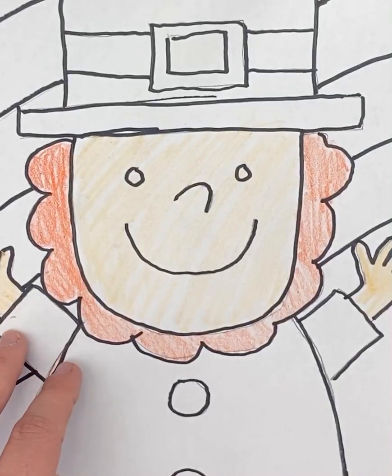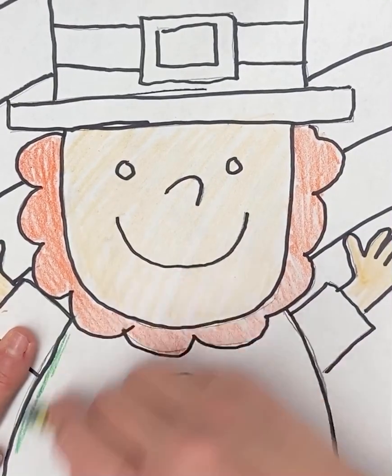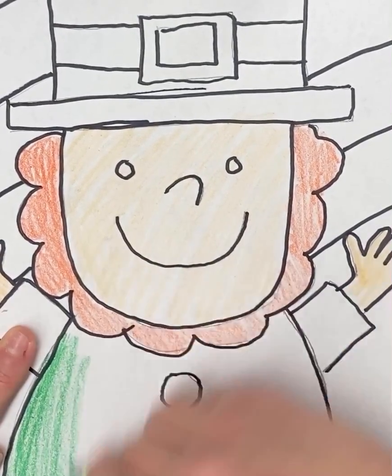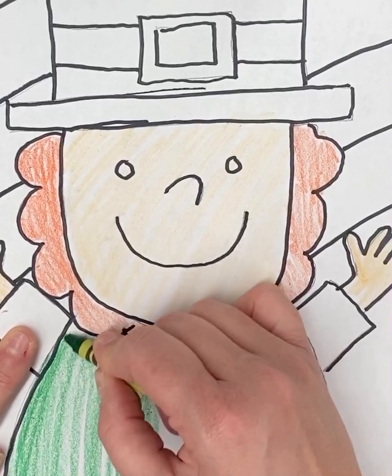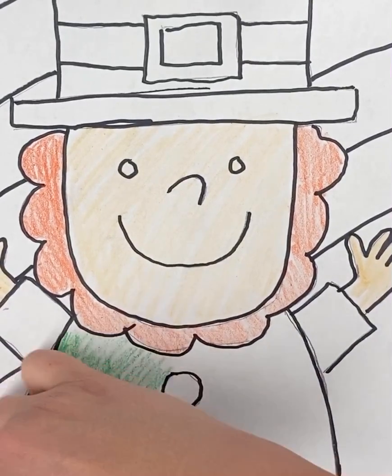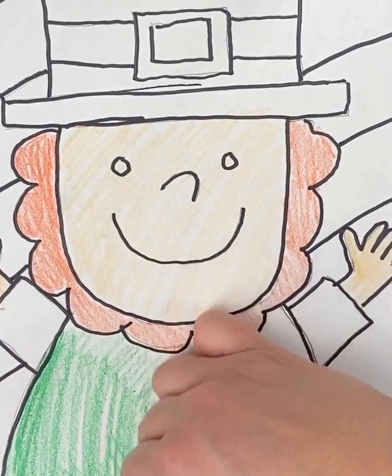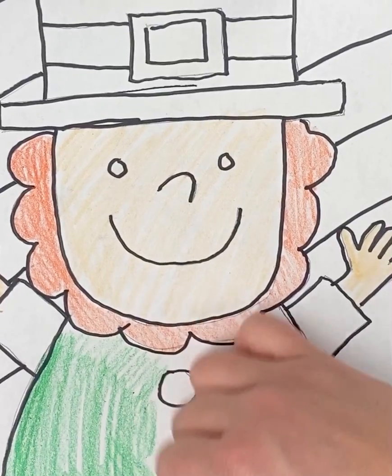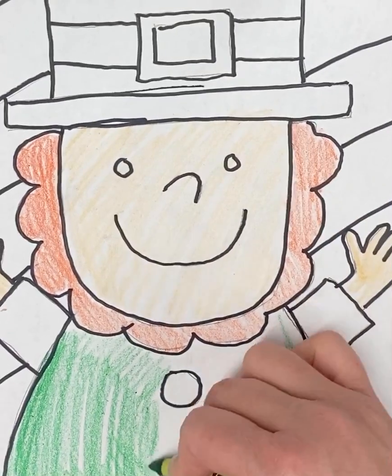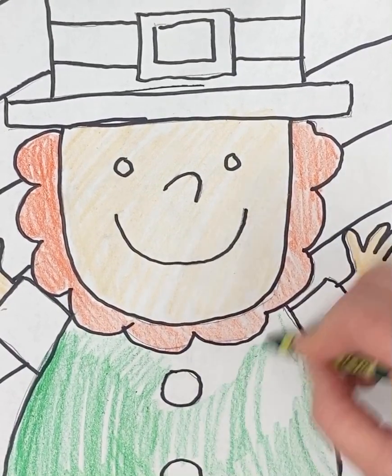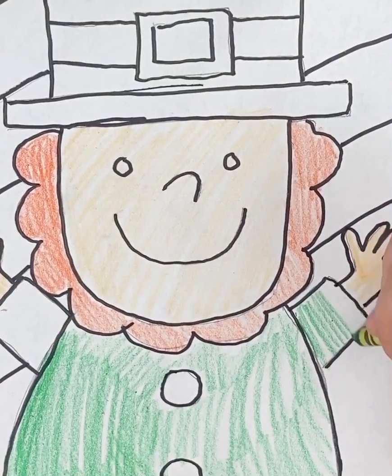Then, for my leprechaun's outfit, of course he has to be wearing green. So I'm going to make his whole outfit green. I'm going to go over around my buttons here. I haven't decided what color I like my buttons. Maybe I'll do them gold. So I'm going to color my leprechaun. Do his little sleeves.